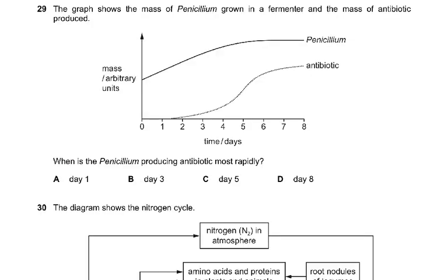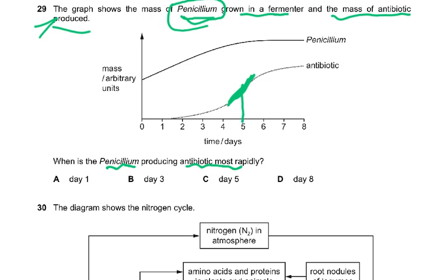Question number 29: the graph shows the mass of Penicillium grown in a fermenter and the mass of antibiotic produced. When is the Penicillium producing antibiotic most rapidly? You look at where the antibiotic level is rising most steeply — the antibiotic increases a little, then there is a sharp increase, then it levels off.